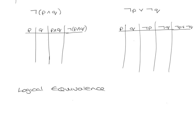So if we look at these two statements, we've got not P and Q compared to not P or not Q. To see if they're logically equivalent, we need to come up with a truth table for each of them.